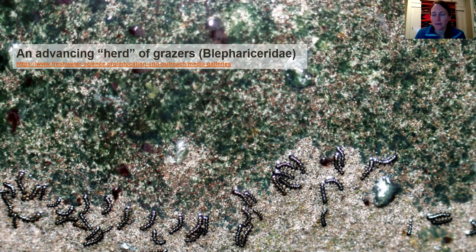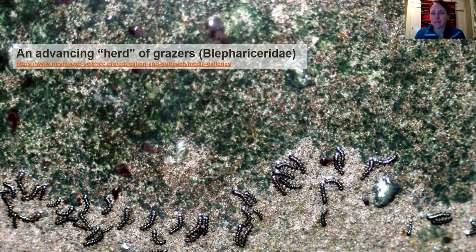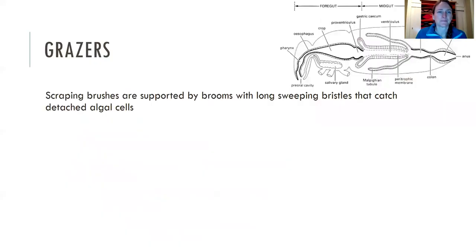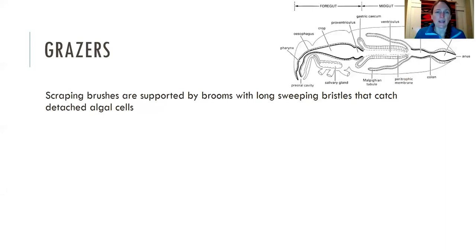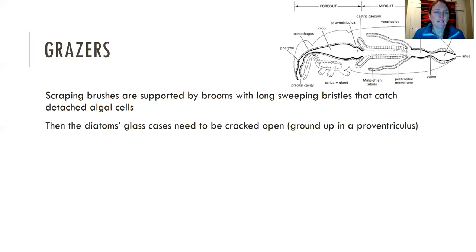Here's a picture showing an advancing herd of grazers doing serious damage to algal periphyton growth on the rock. These are all blepharicidae larvae — a true fly larva — advancing along like a herd of ungulates on the savannah. Grazers have scraping brushes often supported by brooms with long sweeping bristles that can catch detached algal cells.